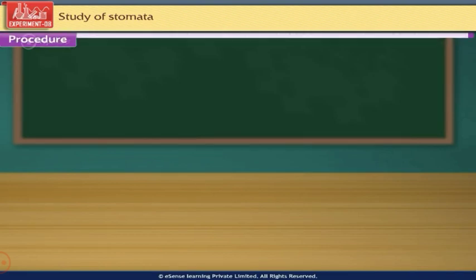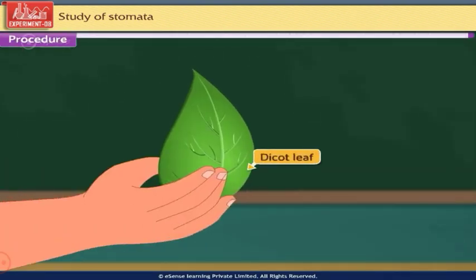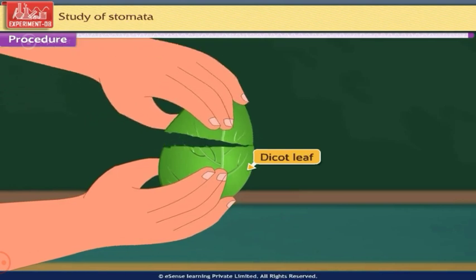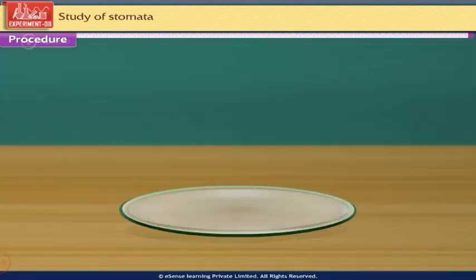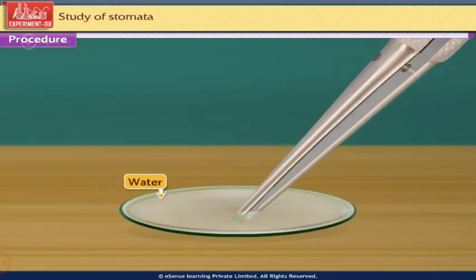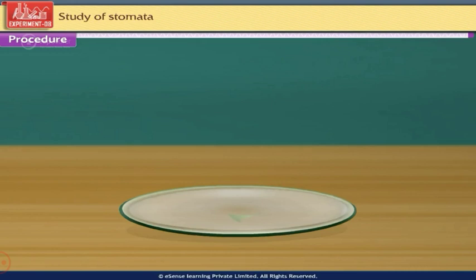Let us now begin with the experiment. Take a dicot leaf and tear it. Get a thin peel using forceps. Keep the peel in a watch glass containing water. Put a few drops of saffronine stain in the watch glass.